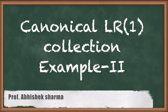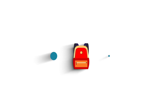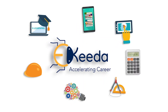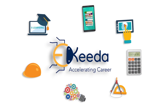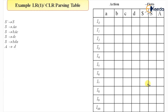Hello friends, in today's class we are going to see example 2 for Canonical LR(1) collection as well as the table. Welcome again — this is the second example of creation of the LR(1) parsing table. I have taken a grammar which was not SLR, and we will also create the table for it. So this is the grammar and I'll start creating the collection part.